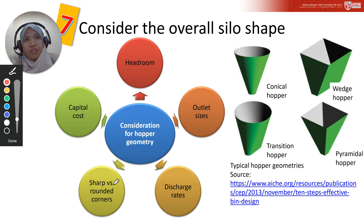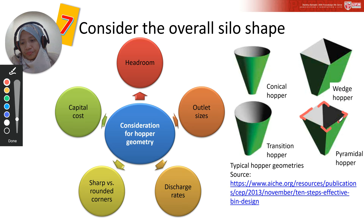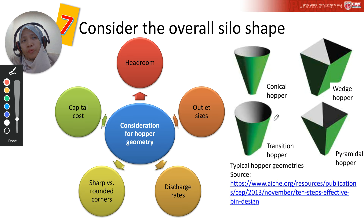Third, sharp versus rounded corners: pyramidal hoppers can cause funnel flow to develop because of their inflowing valleys, which are less steep than the adjacent side walls. In comparison, conical and transition hoppers do not have corners, which tend to allow better material flow.